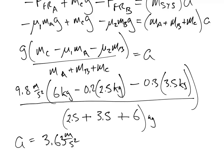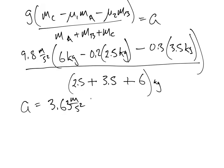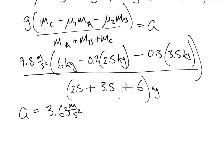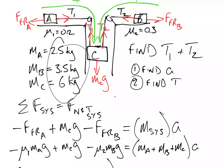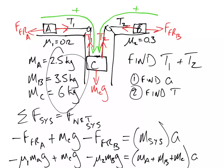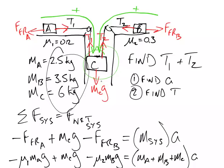Now that we know the acceleration, we can calculate the tensions. We should not choose C first because its equation would have both T1 and T2 as unknowns — one equation, two unknowns, we'd get nowhere. Instead, let's pick A and B separately to get T1 and T2. Let's do A first.